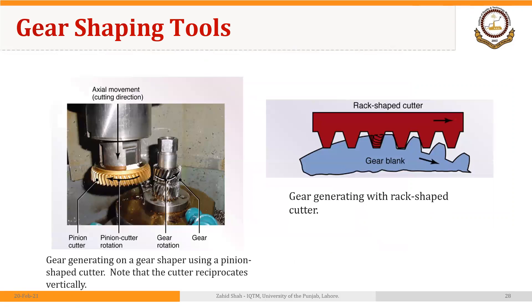Another gear-making method in machining is gear shaping tools. Here, the blank rotates just like in gear hobbing, and the cutter also rotates. But the basic cutting action is through axial movement — the reciprocating movement of the cutter. The cutter moves up and down. You could see that the blank is rotating.